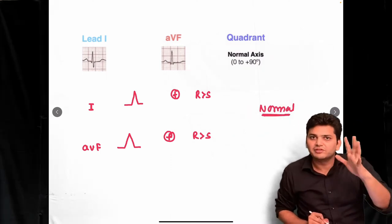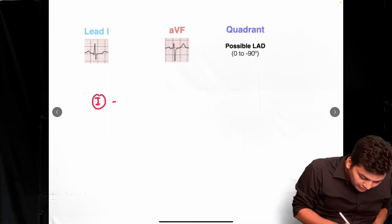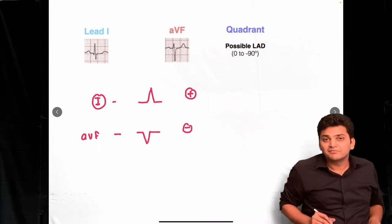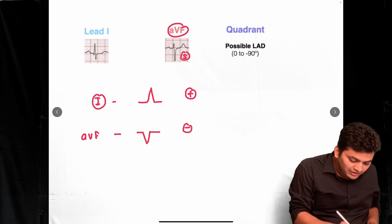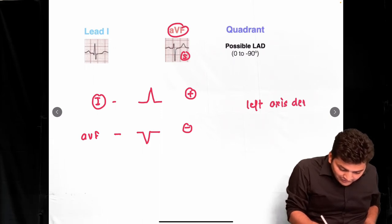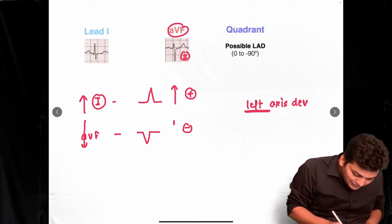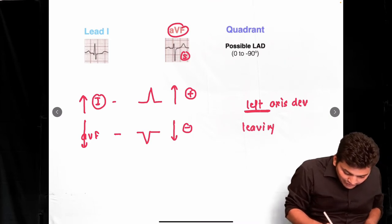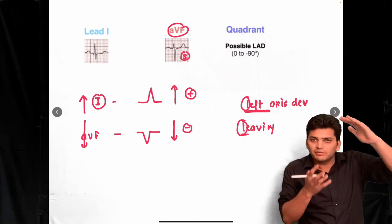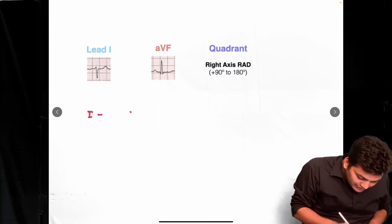If both Lead I and AVF are positive, it is a normal axis. The second example: if Lead I is showing a positive deflection whereas the AVF lead is showing a negative deflection — where the S wave is bigger than the R wave — then it is left axis deviation. An easy way to remember: if Lead I and AVF are leaving one another — Lead I going up, AVF going down — that is left axis deviation. 'L for leaving, L for left.'